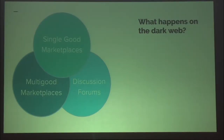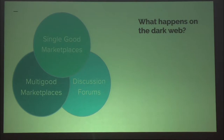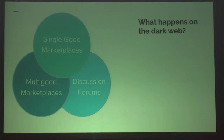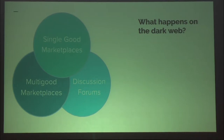You've probably heard of the dark web, and when you think about it, you probably think of a multi-good marketplace. The best-known examples are Silk Road — gone but not forgotten — or Alphabay. These are places where commerce happens, with no restriction on what goes up there. Those goods can include drugs, stolen digital media, and things that lead to fraud. There's a huge criminal ecosystem for fraud on the dark web.